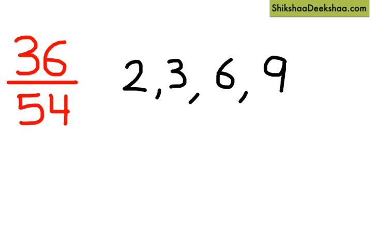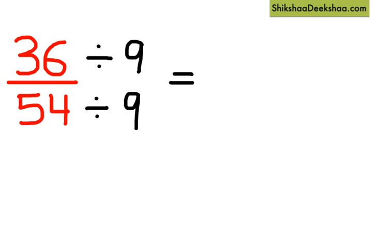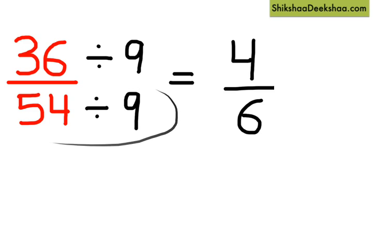Let's take the biggest number and divide both of them. So when we divide it, we have 9 fours are 36 and 9 sixes are 54. That is 36 divided by 9 equals 4, and 54 divided by 9 equals 6.